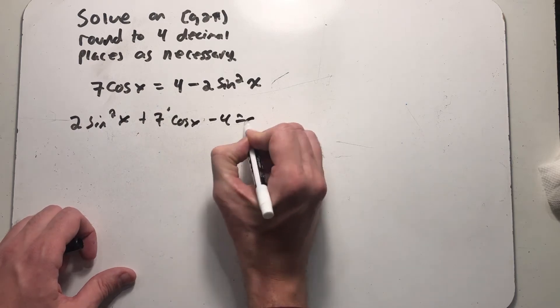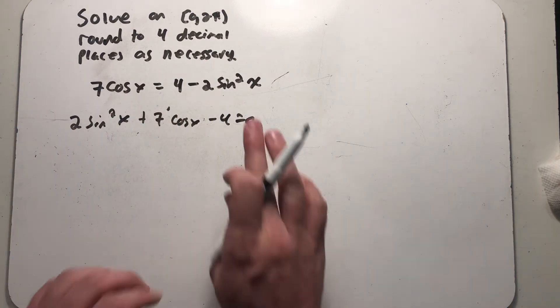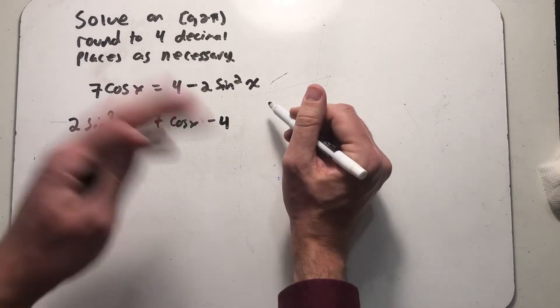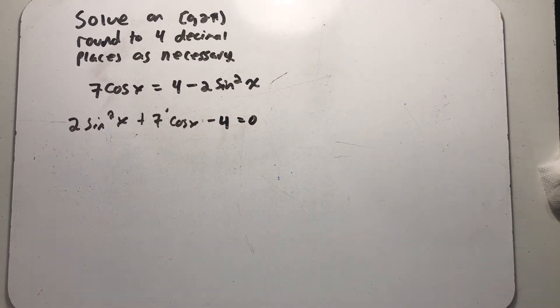So I'm gonna get everything over here on the left hand side by adding the 2 sine squared x and taking four away. I could have chosen to move the other side over and take 7 cosine away from both sides and everything would have worked out just fine. In fact I think I might have created one more step for myself here by choosing what I've chosen but that's okay.